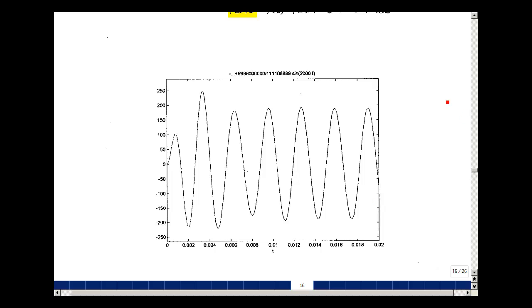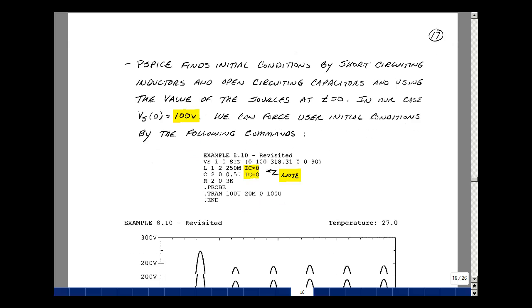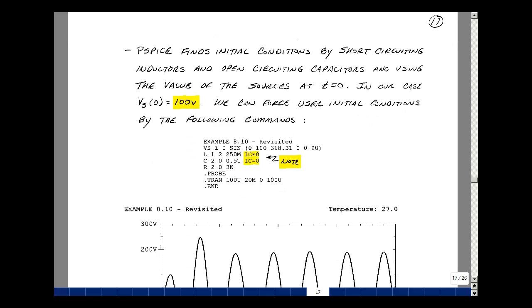The same problem on PSPICE. We had something similar in Chapter 8, but we have zero initial conditions, so we need to take that into account. As discussed in ECE 201, PSPICE and SPICE find initial conditions by short-circuiting inductors and open-circuiting capacitors, using the value of sources at time T equals zero. In our case, we have a cosine function with initial value of 100. This can result in some initial value for inductor current and capacitor voltage.